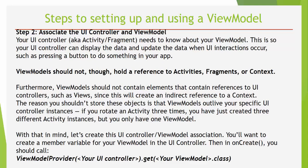The second step will be to associate your UI controller and ViewModel. The UI controller, kind of like an Activity or Fragment, needs to know about the ViewModel so your controller can display data and update data when UI interaction happens, such as pressing a button. Please note: ViewModel should not hold a reference to activities, fragments, or context. ViewModel should not contain elements that reference UI controllers, such as Views, since this will create an indirect reference to a context. If you rotate the activity three times, you have created three different activity instances but you only have one ViewModel.